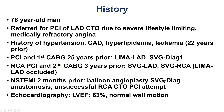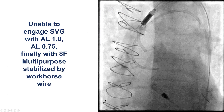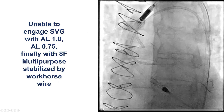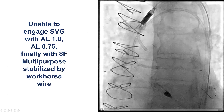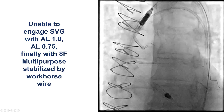He had a patent vein graft to diagonal with a distal anastomotic lesion that was angioplasted, but no stents were placed due to concerns for causing a complication. There was also an unsuccessful attempt for re-canalizing a right coronary CTO, and the patient had a normal ejection fraction. He was sent for PCI of an osteo-LAD CTO.